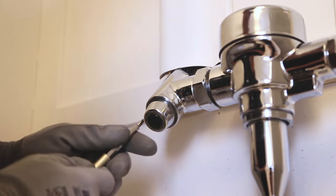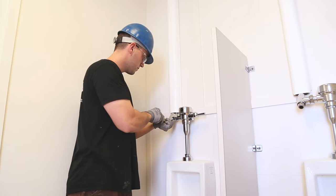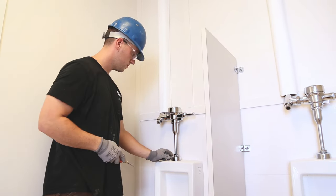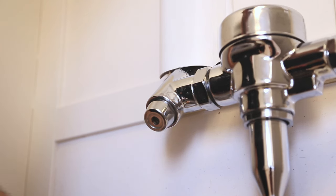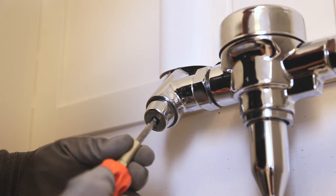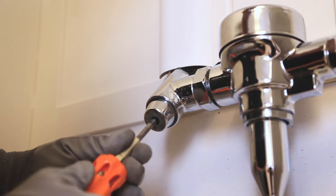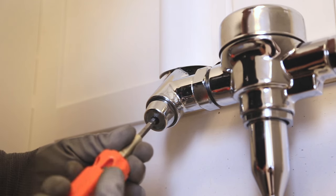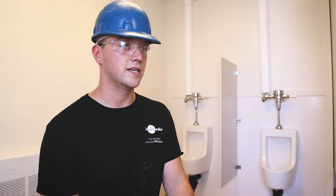You change the amount of water running through the urinal by removing the black cap on the flush valve. Pop that cap off and you'll need a flat screwdriver to go up in the hole. There's a screw inside there. If you want more water, you'll loosen it off. If you want less, tighten it.